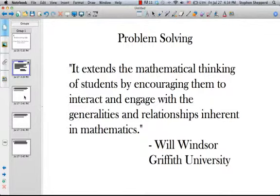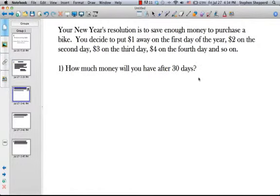So here is a question that Will Windsor had in his paper that I want to kind of give credit to him for this. But it's just a question that really just fosters thinking. How do you solve this? So the question says, your New Year's resolution is to save enough money to purchase a bike. You decide to put $1 away on the first day of the year, $2 on the second day, $3 on the third day, $4 on the fourth day, and so on. So the main question is, how much money will you have after 30 days?